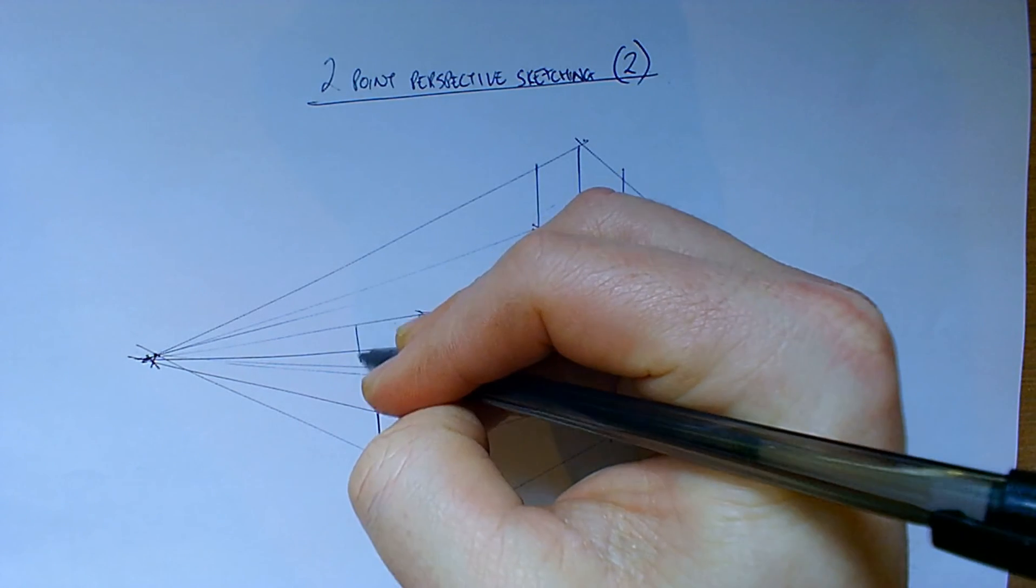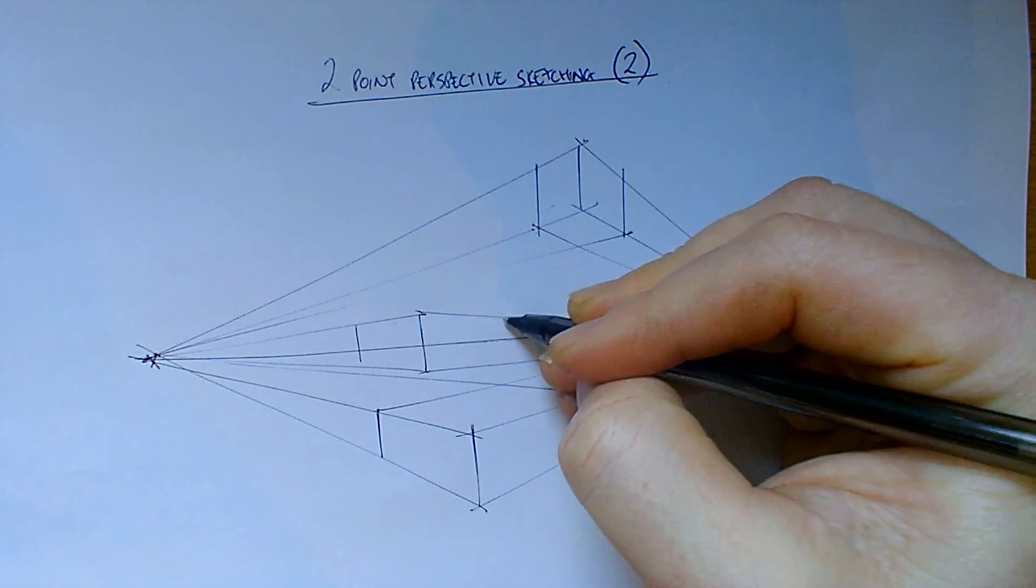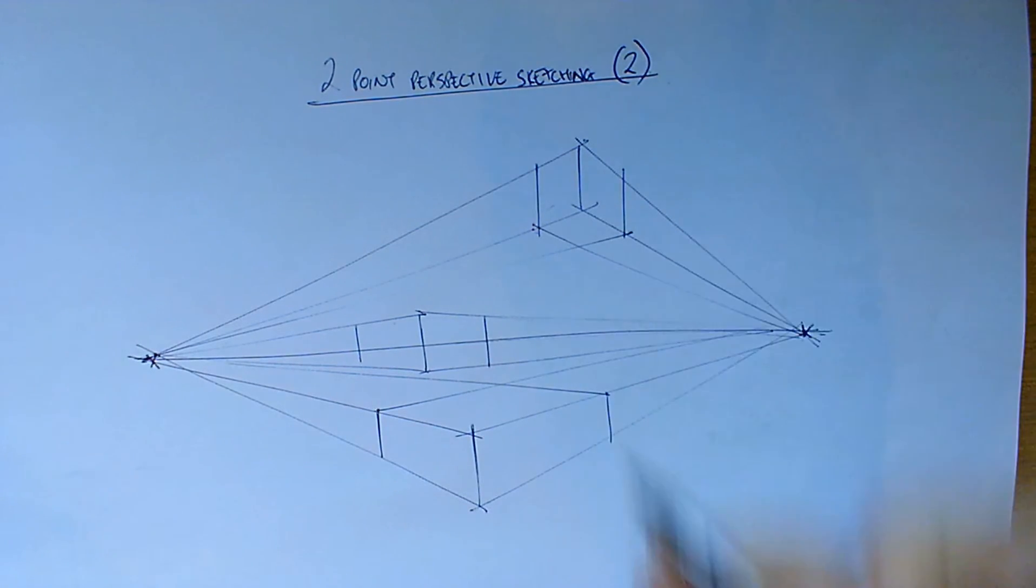Then we'll chop the sides like we have with all of the other cuboids, off where we want them. So now we've got our three cuboids looking below the horizon line, above, and on.